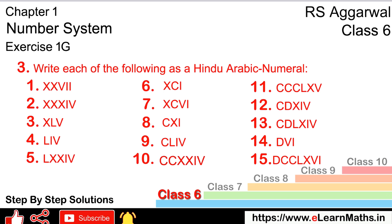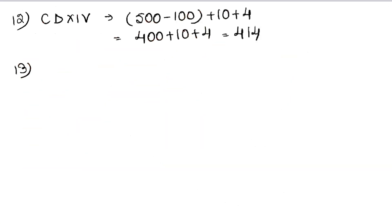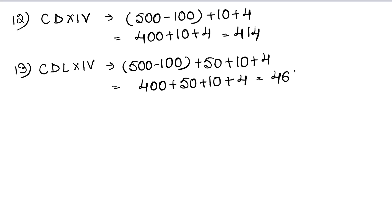It looks like CDLXIV. CD means 500 minus 100, L is 50, X is 10, and IV is 4. So 400 plus 50 plus 10 plus 4, that means 464 is the answer.